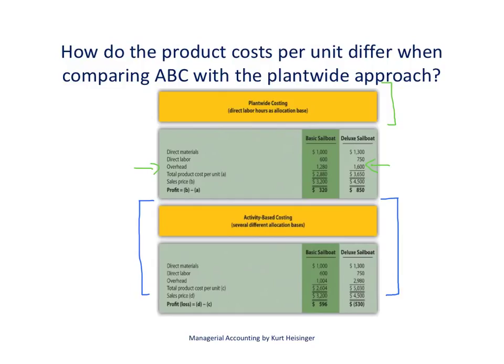You'll notice that the direct materials and direct labor costs are above the overhead cost and are the same for both examples, as you can see toward the bottom as well. Going back to the plant-wide costing approach, our total product cost per unit for the basic boat was $2,880, and for the deluxe sailboat is $3,650. We also now have the sales price — $3,200 for the basic sailboat and $4,500 per unit for the deluxe sailboat.